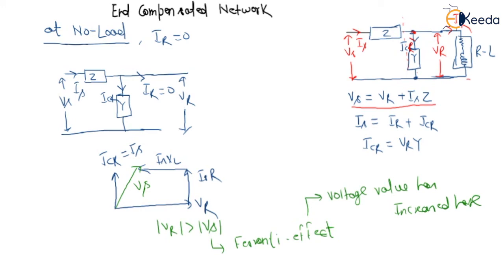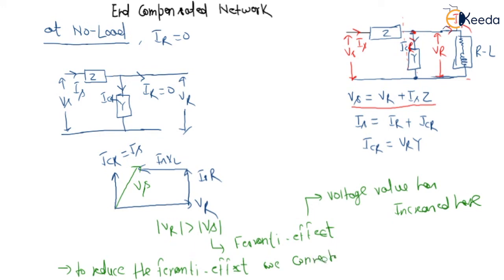The Ferranti effect means the voltage value has increased at the receiving end. To minimize this effect and reduce the Ferranti effect, we connect an inductor in shunt at the receiving end bus.